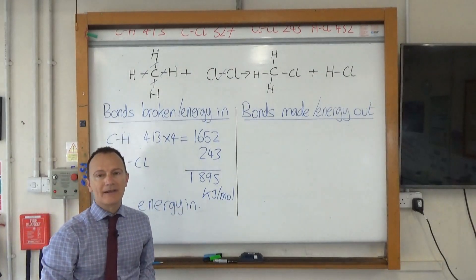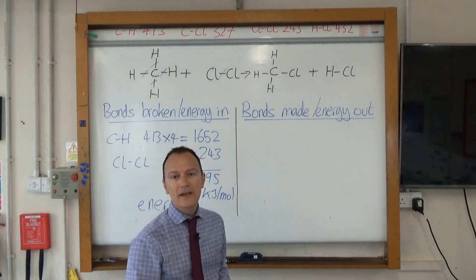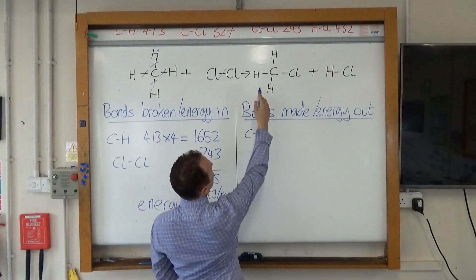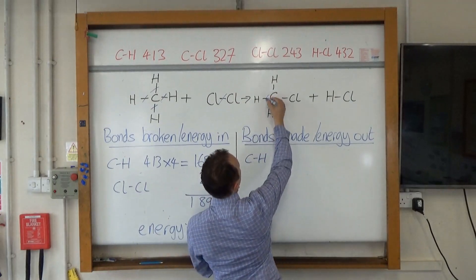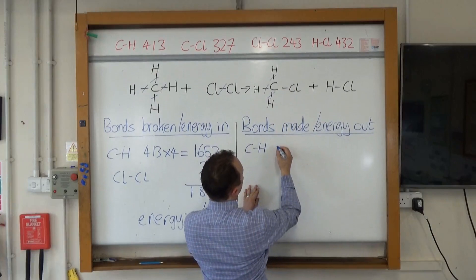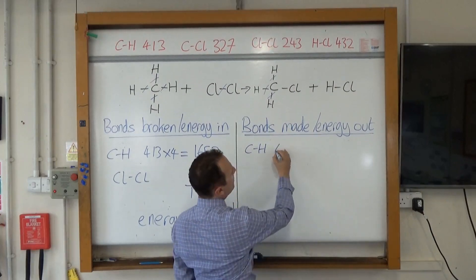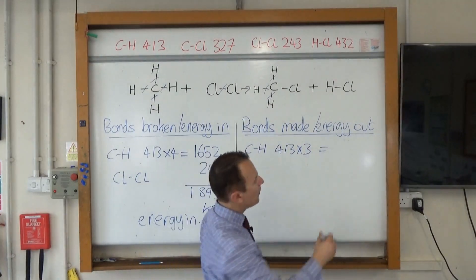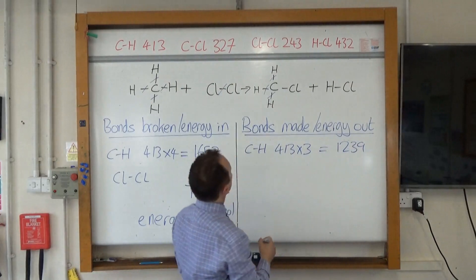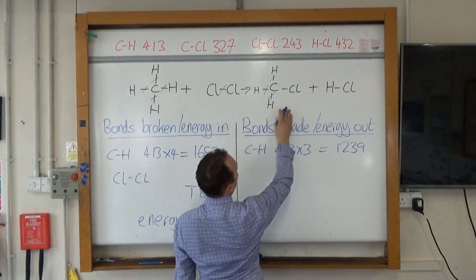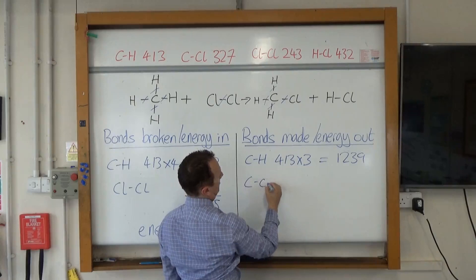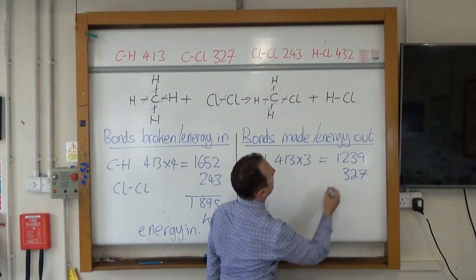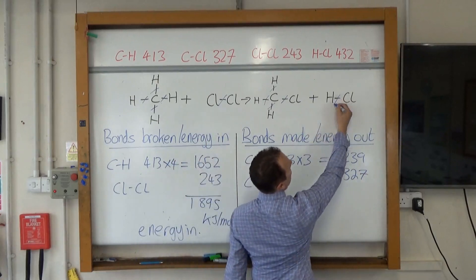We then need to think about the bonds being made. First of all we've got some C–H bonds again, but this time we've only got three of them — one, two, three. So C–H is going to be 413 times three, which comes to 1,239. We've then got this C–Cl bond, which is 432. And we've also got this H–Cl bond.